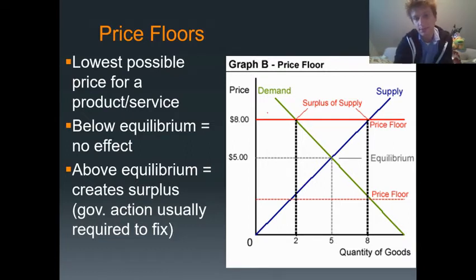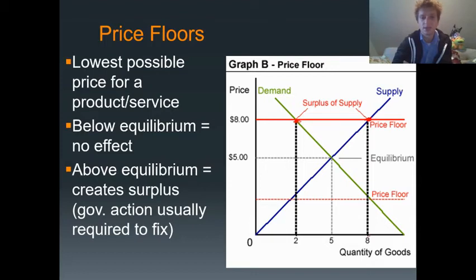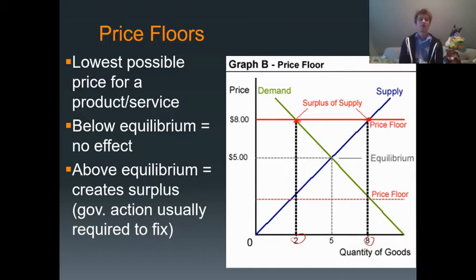If the price floor goes above equilibrium — say here it's at eight dollars — then quantity supplied is greater than quantity demanded, so we end up with a surplus. Here we have a quantity supplied of eight and a quantity demanded of two, so only two units are being sold and we have a surplus of six.